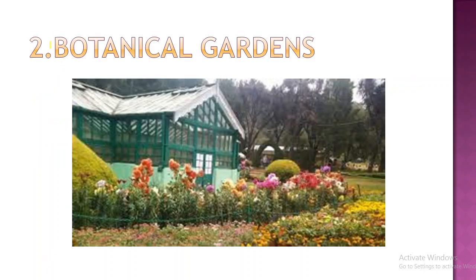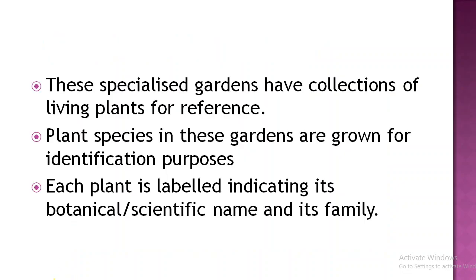Next is the botanical garden. We all know what a botanical garden is. There are different types of species of plants. You can also find the botanical name - the binomial nomenclature - added to each plant. In a herbarium, you store dried plants, but in a botanical garden, you can store and observe living plants. That is the speciality of botanical gardens.